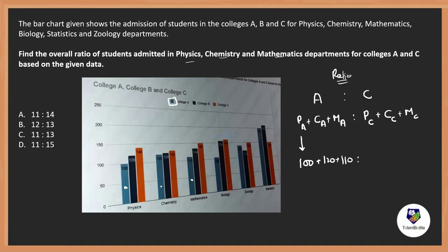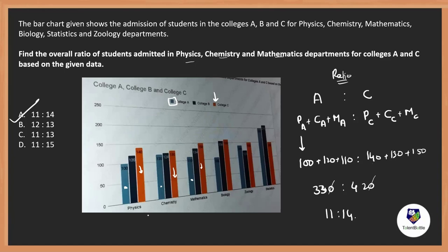College C: Physics (orange) = 140, Chemistry = 130, Mathematics = 150. College A total: 100 + 120 + 110 = 330. College C total: 140 + 130 + 150 = 420. The ratio is 330 : 420. Dividing both by 30 gives 11 : 14. So the answer is 11 to 14.